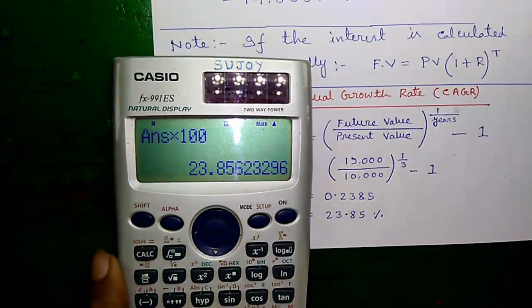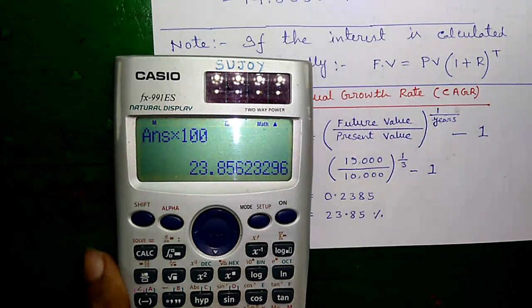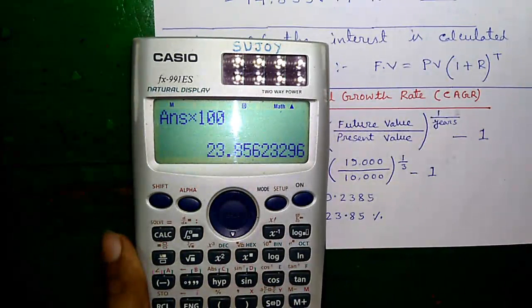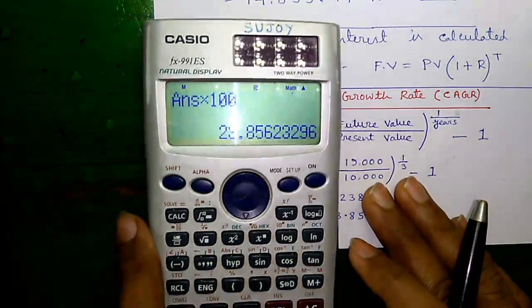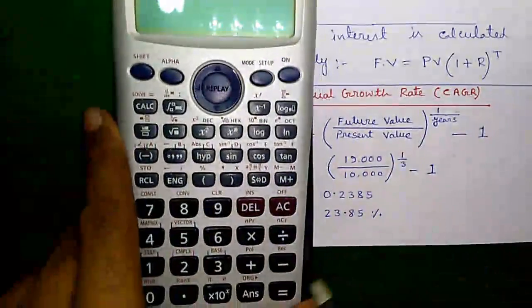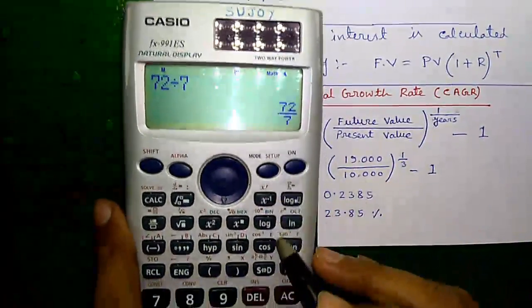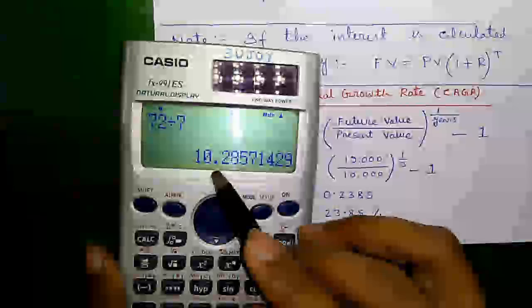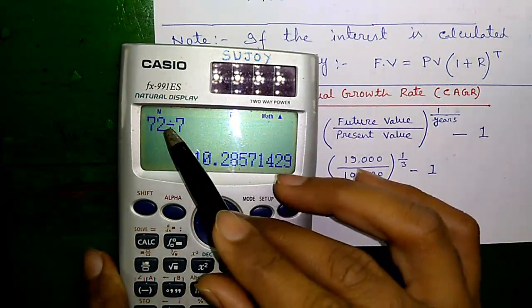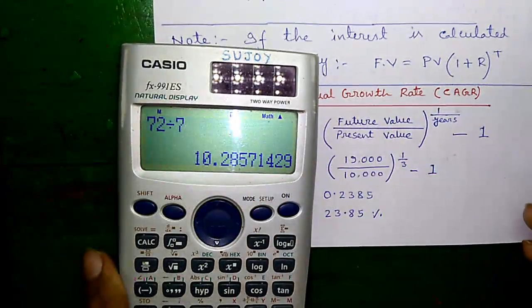Now, rule of 72. If you want to know in how many years your investment will get doubled, you can find out by rule of 72. Let's say, bank is giving 7% interest on your investment. So, 72 divided by 7, press equals to, S to D, in 10.28 years, your investment will get doubled at the rate of 7% per annum.